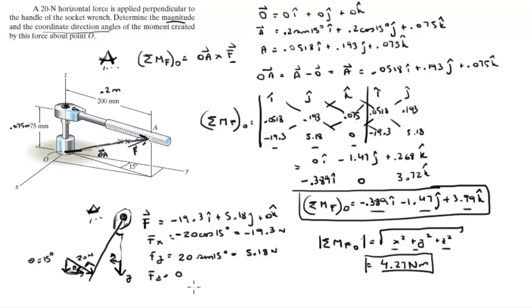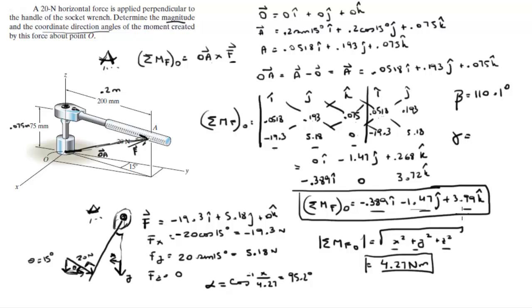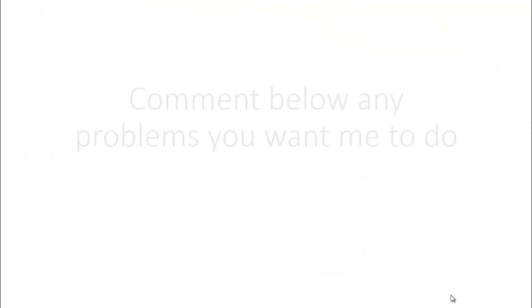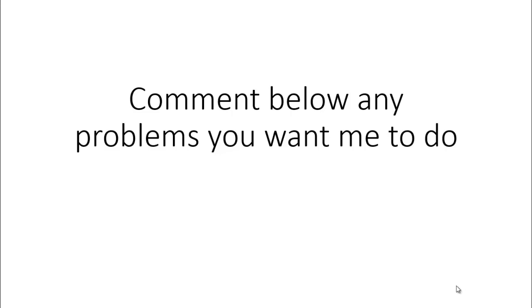For the coordinate direction angles: the first angle alpha equals cosine inverse of (−0.389 / 4.27) = 95.2 degrees. The second angle beta equals cosine inverse of (y-component / magnitude) = 110.1 degrees. The third angle gamma equals cosine inverse of (3.99 / 4.27) = 20.9 degrees. Those are the final answers for the magnitude (4.27 N·m) and the three coordinate direction angles.